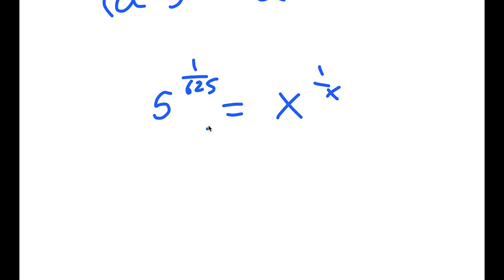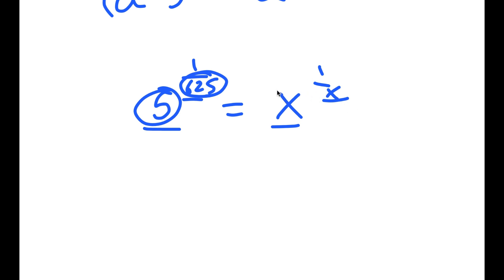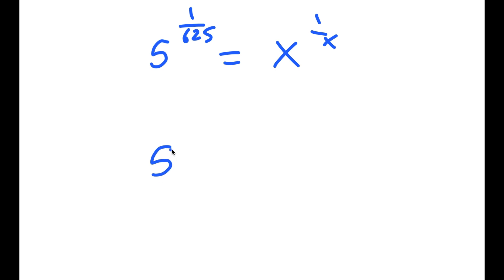From here, I want to change my left-hand side so that it's in the form of a number to the power of 1 over that same number. Basically, I want these two numbers to be the same, so they align with x to the power of 1 over x. Right now they're different, so I'm going to rewrite this as 5 to the power of 5 over 5, times 1 over 625.